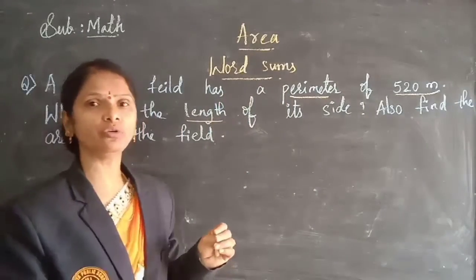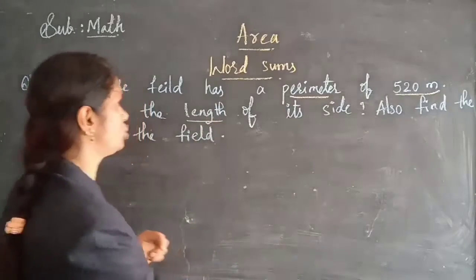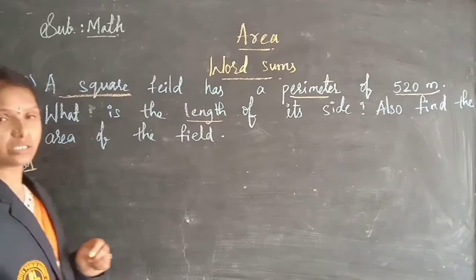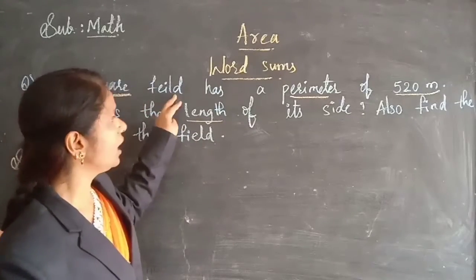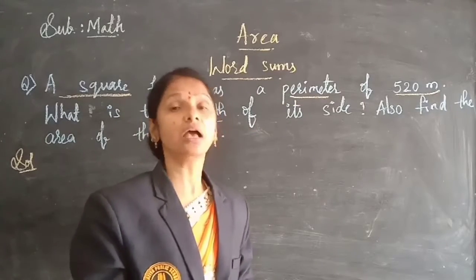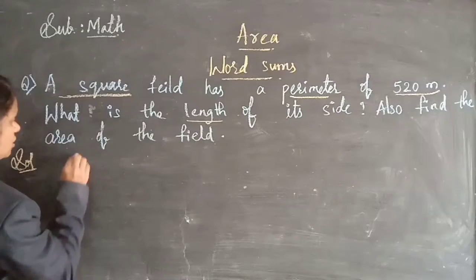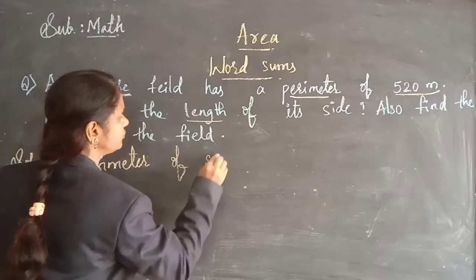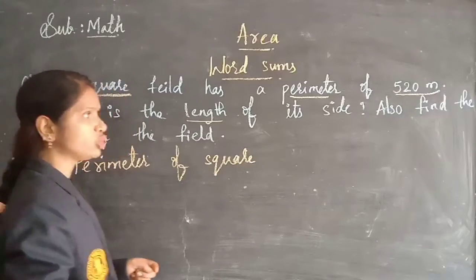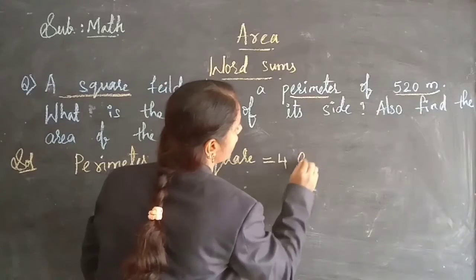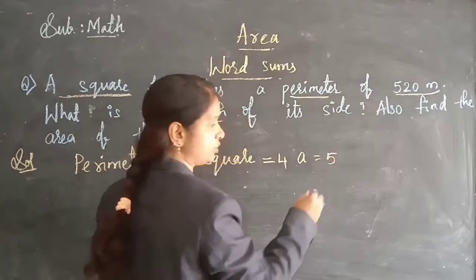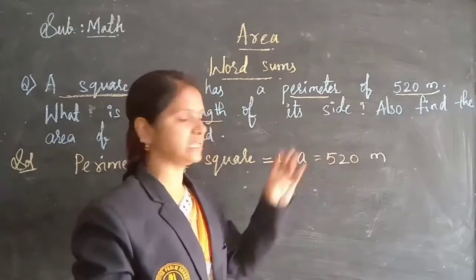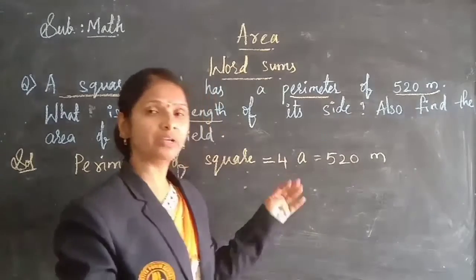After getting the side length, you need to find the area of the field. The given field is a square shape. We need to use the perimeter of a square formula. The perimeter of a square is 4A, which equals the given value of 520 meters. So 4A = 520 meters, and from this we can find the value of A.